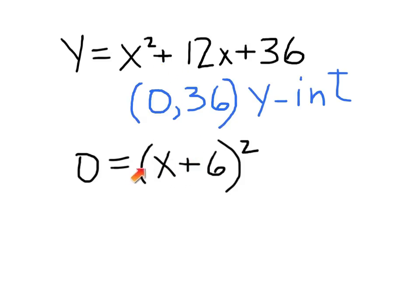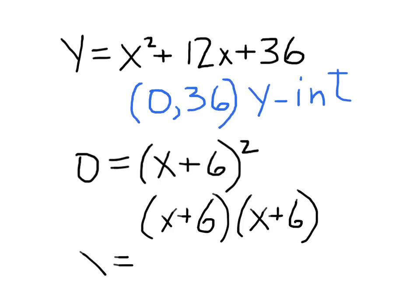So this means what? The x intercept—there's only one x intercept. So this is basically, if we look at it spread out, it's x plus 6 times x plus 6. That's a squared thing, which means the actual value of x would have to be, again, when this is zero...